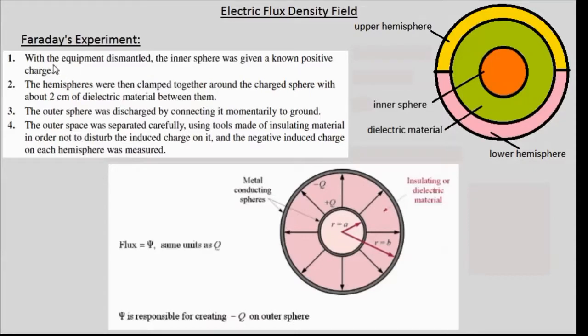Let's look at the steps of Faraday's experiment. With the entire equipment dismantled, the inner sphere was given a known positive charge, plus Q, as shown here. And the hemispheres were then clamped together around the charged sphere with about 2 cm perimeters of dielectric material between them.